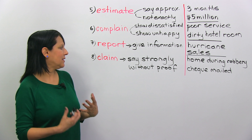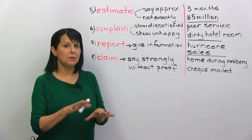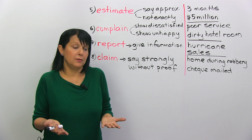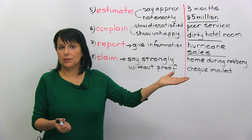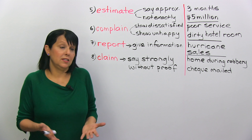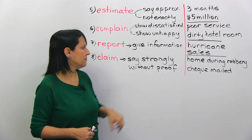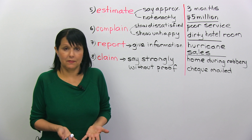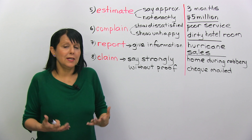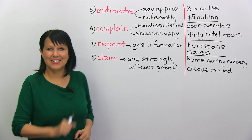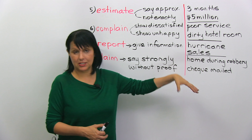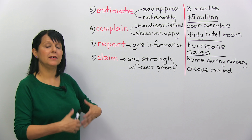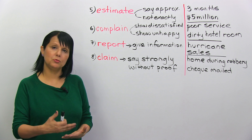Number eight is 'claim.' To claim is to say something strongly without proof — the proof isn't there yet. For example, the police might say he claims he was at home during the robbery — but we can't confirm it. Or they claimed they had mailed the check, but we didn't receive anything. That doesn't mean the person is lying; it simply means someone is saying something without proof, or without proof yet.